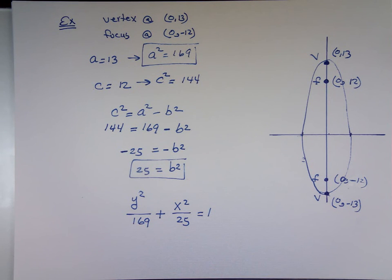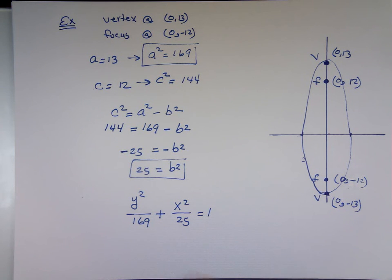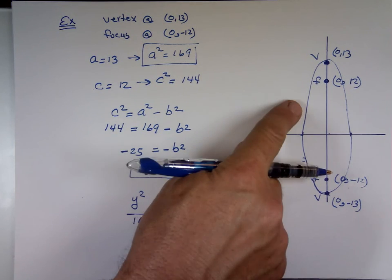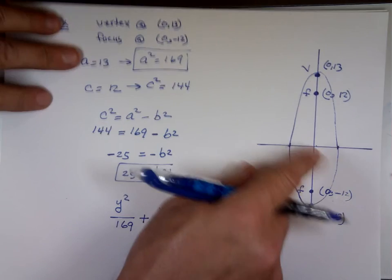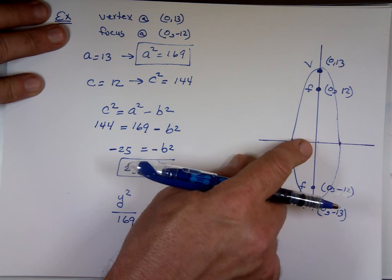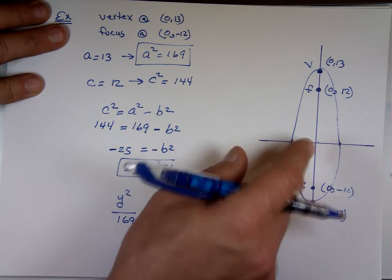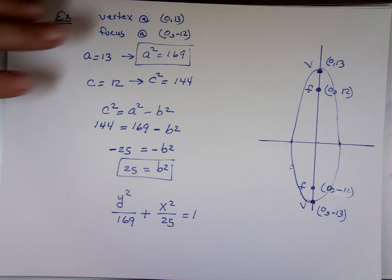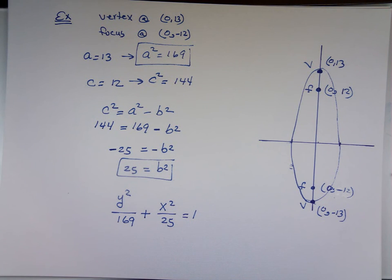That's enough for today. We only have two more topics for next class. The circle is done — we don't have to touch it. But the parabola and the ellipse — notice the center is always at the origin. Next class we're going to move that center; it won't be the origin. We also need to add one more topic: the hyperbola. So we have two more sections left.